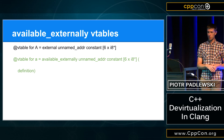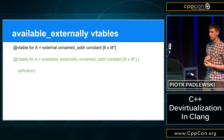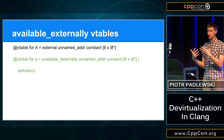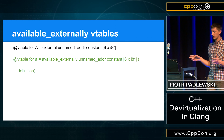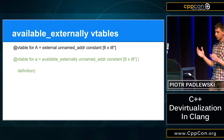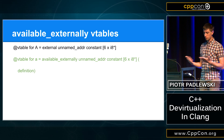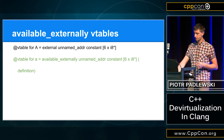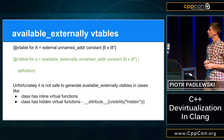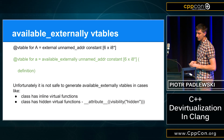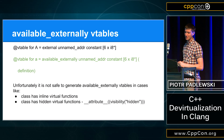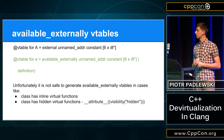The other thing about VTable linkage is something called available externally linkage. What it does is it doesn't change the linkage of the VTable, but it gives a definition that we get rid of just before we make the binary. Because of it, the optimizer sees a definition and can do more. And of course it will not make the binary bigger because we get rid of it. Unfortunately, we can only do this right now on the Itanium ABI if we don't have any inline virtual functions or hidden virtual functions, which is pretty bad, but for now it's not easy to solve.